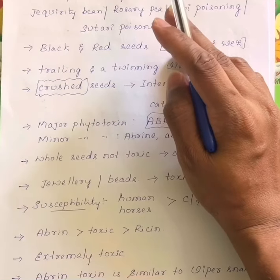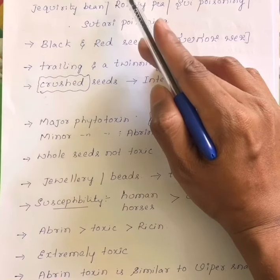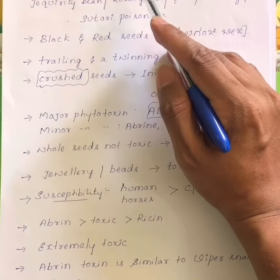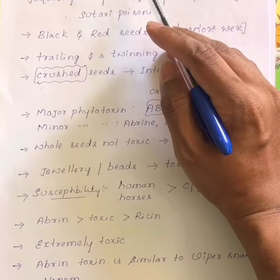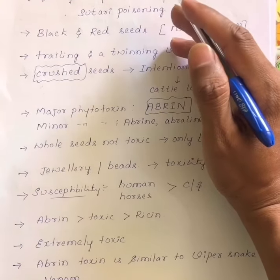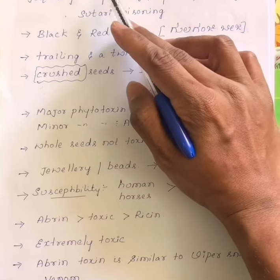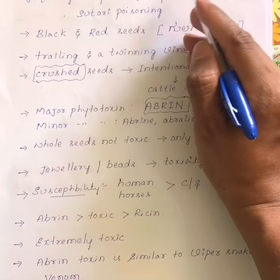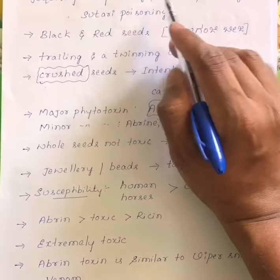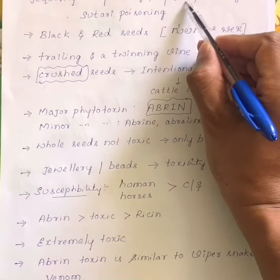The first plant, Abrus precatorius, we call it the 'Raj Kumar' of our toxicology. We call it so because, just as the great actor Raj Kumar was called by different names — Natasarvabhoma, Kannada Kanti, Rava, Karnataka Ratna — likewise Abrus precatorius is also called by different names: rosary pea, rathi, jakviri, bean rosary pea, or sui poisoning or sutari poisoning.